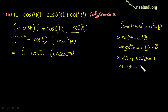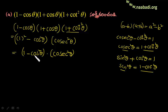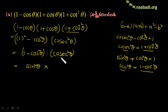1 minus cos squared theta is equal to sin squared theta. The result is sin squared theta. Note that cosec is 1 by sin, so 1 by sin squared theta.